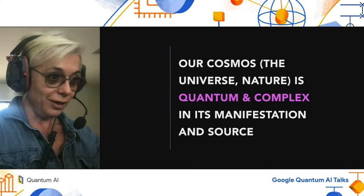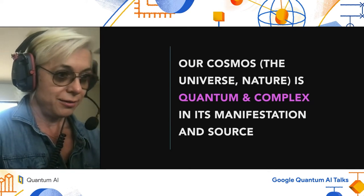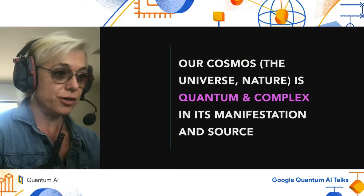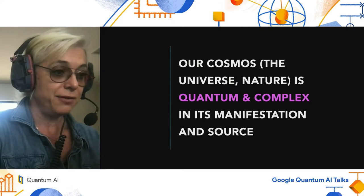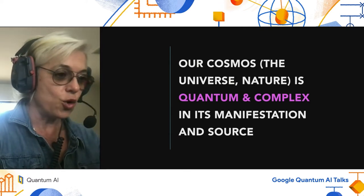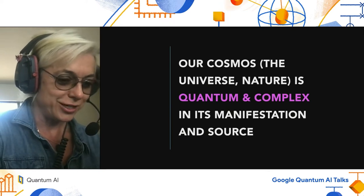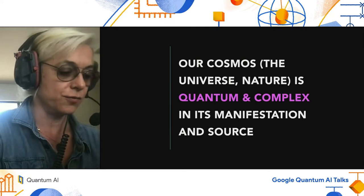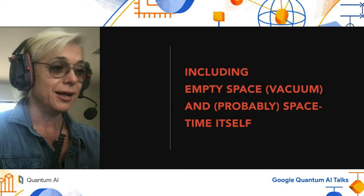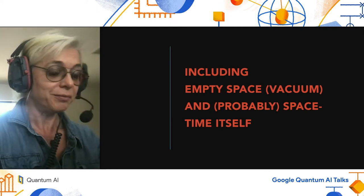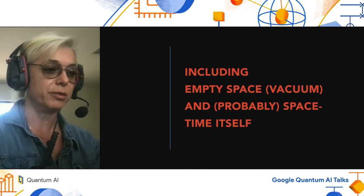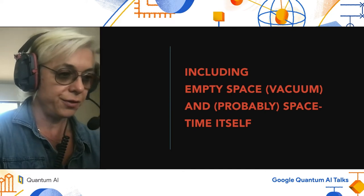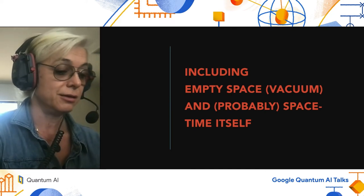Going back to the first slide — a cosmological picture of the universe — we think that our universe and nature is quantum and complex in its manifestation and its source. Of course, it has classicalized because we see classical objects, but the foundational aspects of the cosmos are indeed quantum and complex. That includes empty space — the vacuum. In the past 20 years, we think space itself is connected in some non-trivial way with quantum entanglement specifically.